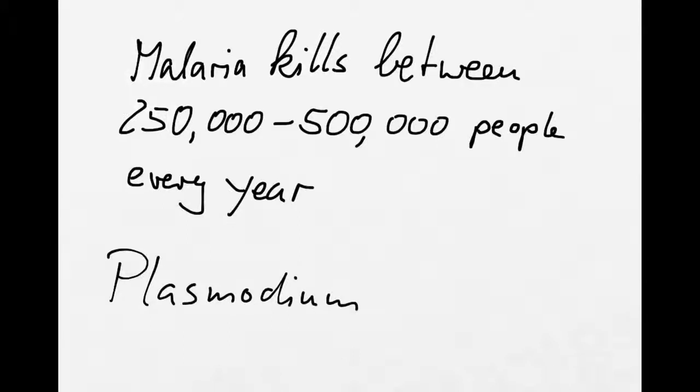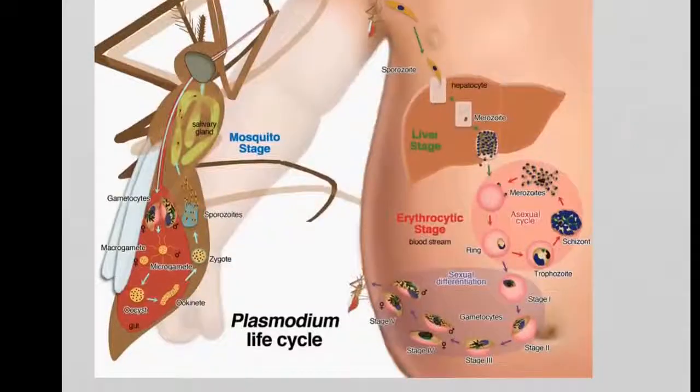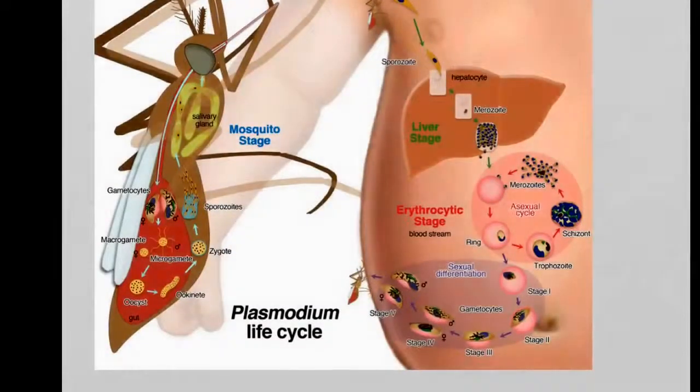This is a single-cell organism. There are several different species of Plasmodium and they are just absolutely ferocious. So how does Plasmodium actually work? It has a fairly complicated life cycle, so let's have a look at that.